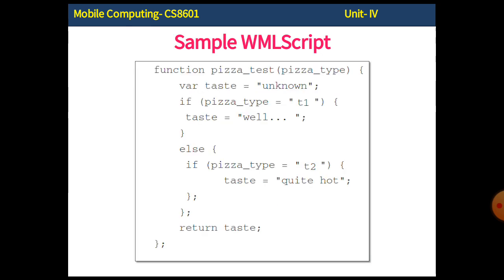Here is a sample code snippet from a Wireless Markup Language Script containing a basic function. It looks like C or C++ structure — a basic function prototype with a function name and one parameter. The function name is 'pizza test' and its operation is to test the type of pizza entered: if it is test type 1 it is set as 'well', and if test type 2 it is set as 'quite hot'. The branch condition is executed and the return statement returns the taste of the pizza. WML Script is very close and native to the C, C++, and Java structure.